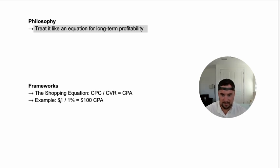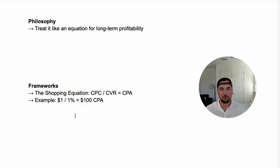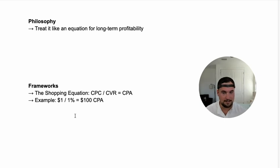For example, if we take a $1 CPC and divide by a 1% conversion rate — CPC divided by conversion rate equals your desired CPA — your $1 CPC at 1% conversion rate gives you a $100 CPA. Is that good or bad? That comes down to the actual CPA you need to be profitable, considering first-order profitability and long-term success with your LTV.